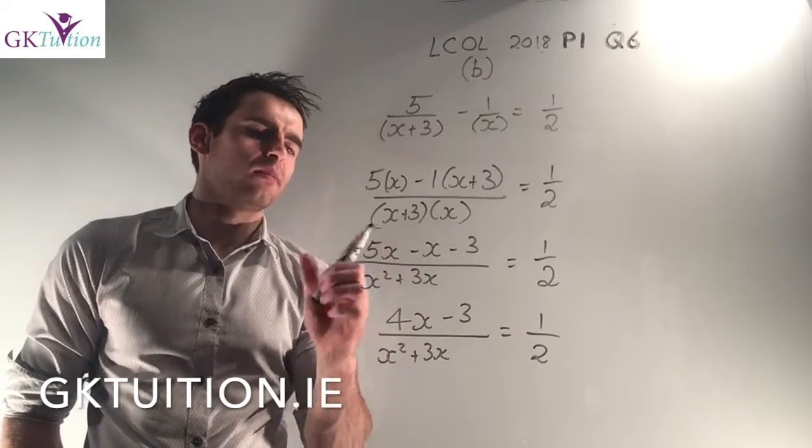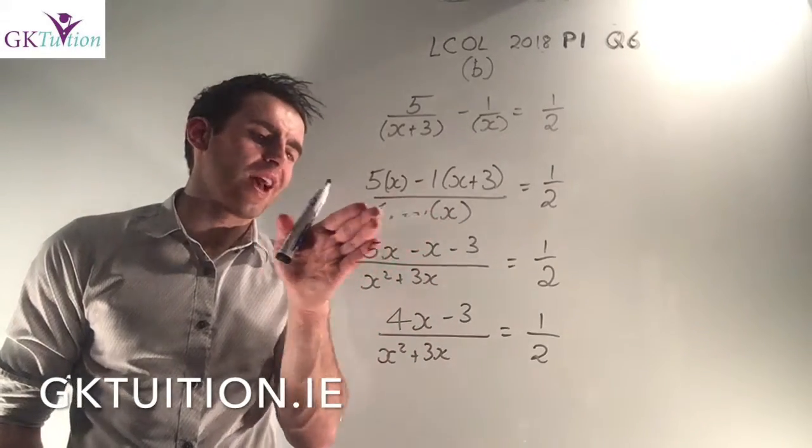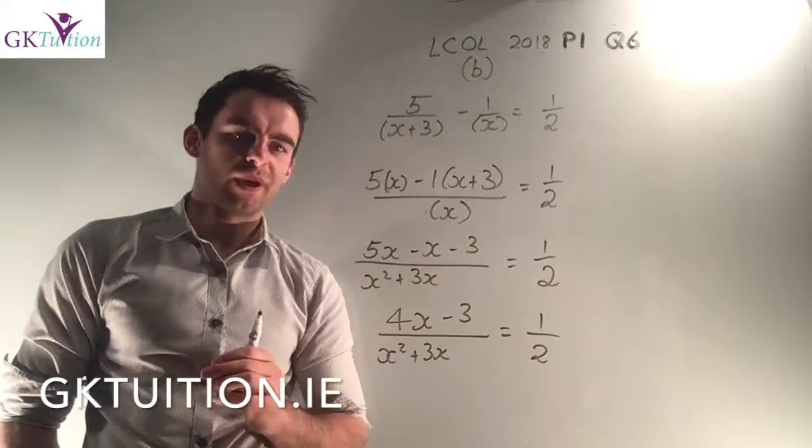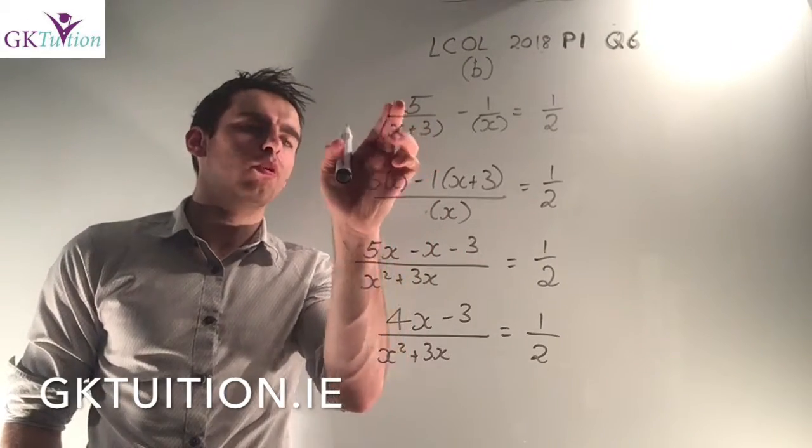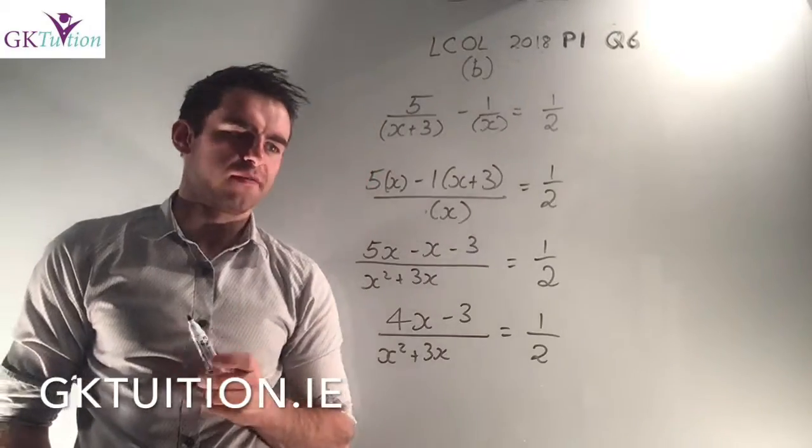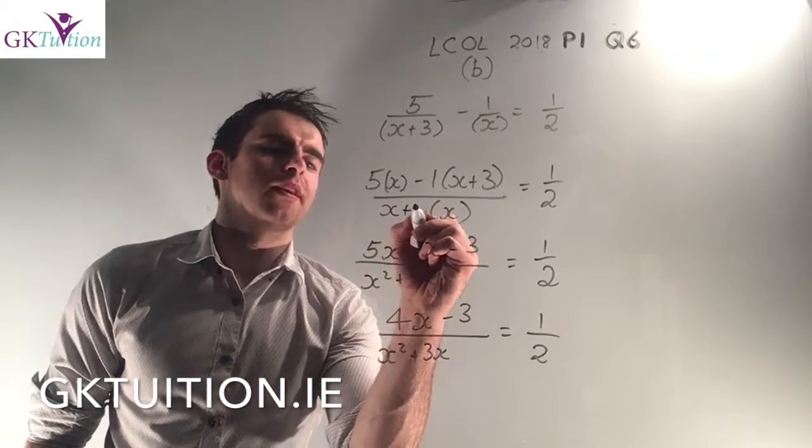(x+3) into the common denominator. Well (x+3) would cancel with itself and you'd just be left with x. Which means that it's x multiplied by whatever is above the (x+3) which is a 5. Okay I'll put that back in now.